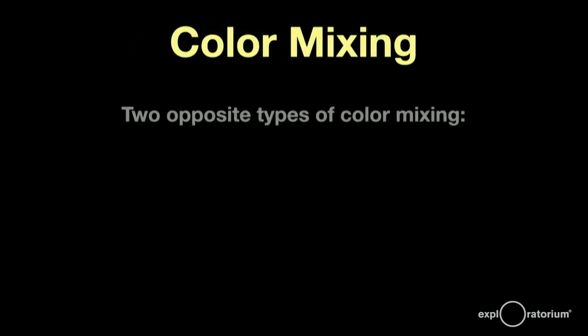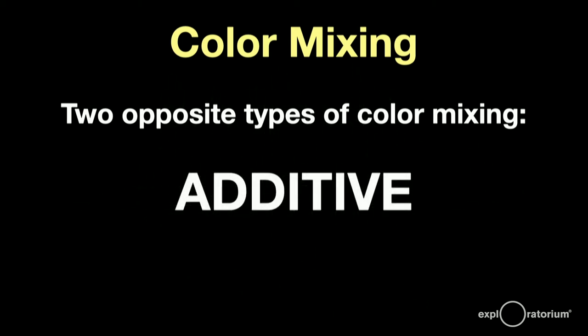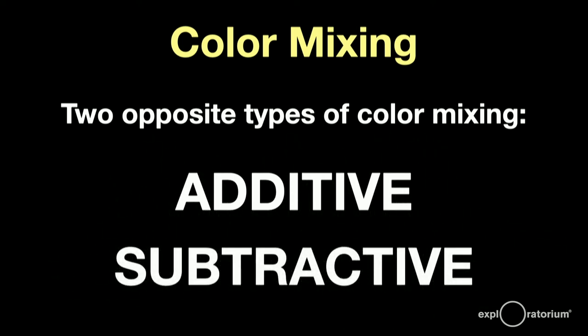There are two basic types of color mixing. Additive mixing, when we start with nothing and add color, like in light, and subtractive mixing, where we usually start out with white and then take colors away, like in painting and printing. Let's look at additive color mixing first.